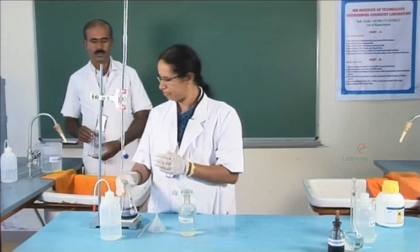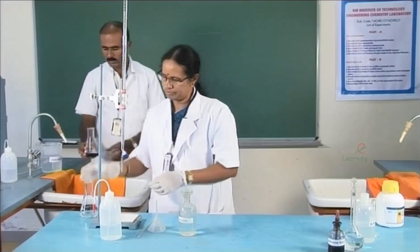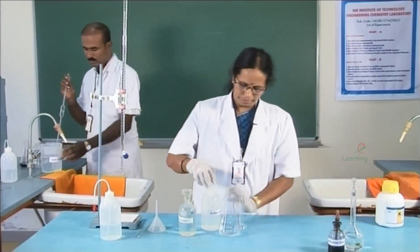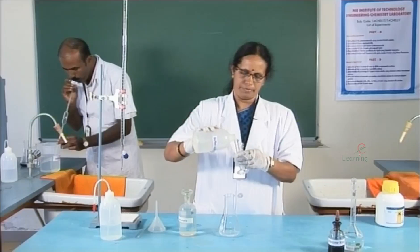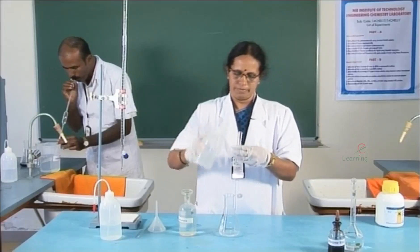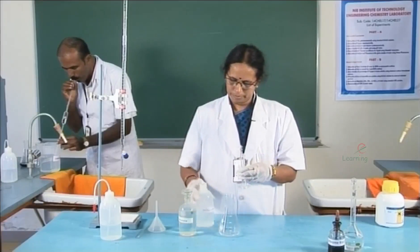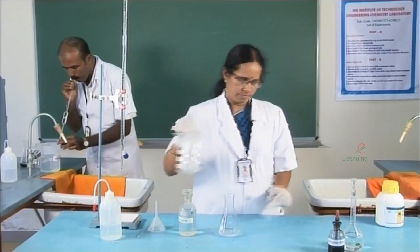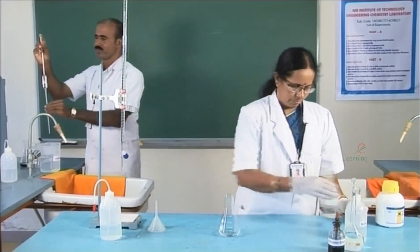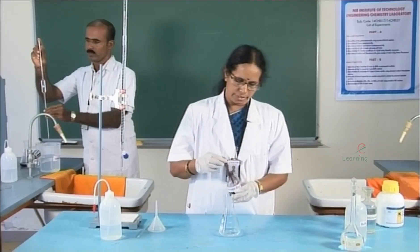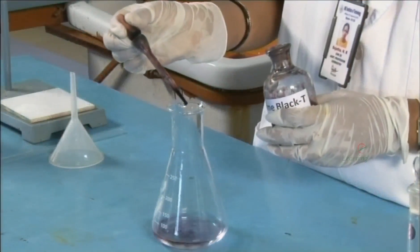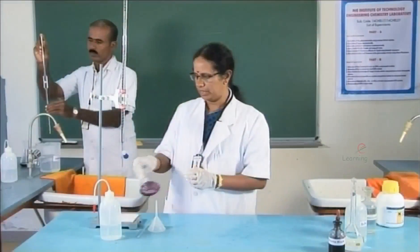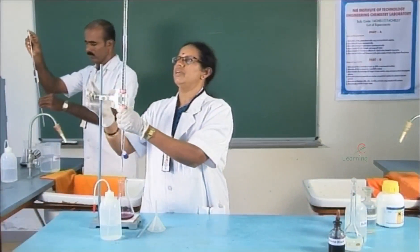For the next trial, the solution has been pipetted out. The buffer is added, followed by 2 to 3 drops of indicator. The wine red solution is titrated again. The initial value is 16, and the titration is continued to get the end point.